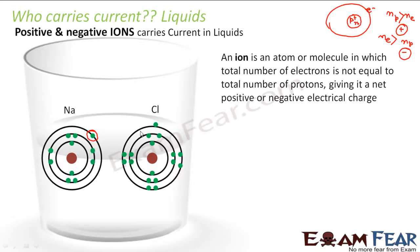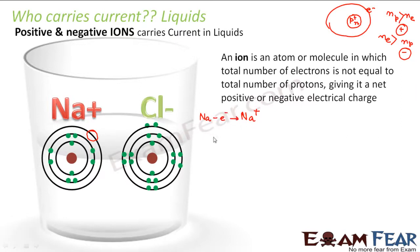So both sodium and chlorine, in order to become stable, sodium loses one electron and gives it to chlorine. Now chlorine is happy because it became stable, and sodium is also happy because it became stable. But since sodium lost one electron, sodium became positively charged — it became Na+. So Na+ is the Na plus ion, formed when sodium lost one electron. Chlorine gained one electron and became Cl minus, negatively charged. Now these Na+ and Cl− ions carry current in liquids, because Na+ and Cl− are positive and negative charges, and flow of these charges constitutes current.